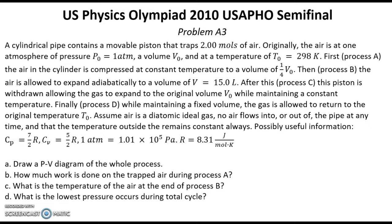Then process B: the air is allowed to expand adiabatically to a volume of V equal to 15 liters. After this, process C: the piston is withdrawn allowing the gas to expand to the original volume V0 while maintaining a constant temperature. Finally, process D: while maintaining a fixed volume, the gas is allowed to return to the original temperature T0.